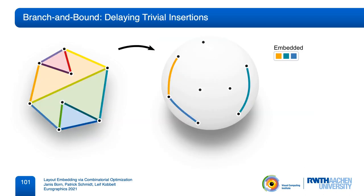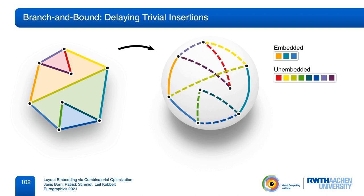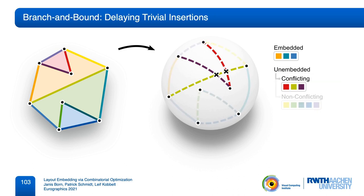Again, consider a partial embedding, where a few edges have already been inserted. As before, we can simulate the remaining paths by computing their shortest embeddings independently. We now partition this collection of unembedded paths into two categories: the conflicting paths, which have at least one intersection with another one, and the non-conflicting paths, which are intersection-free. It is interesting to see what happens after an insertion.